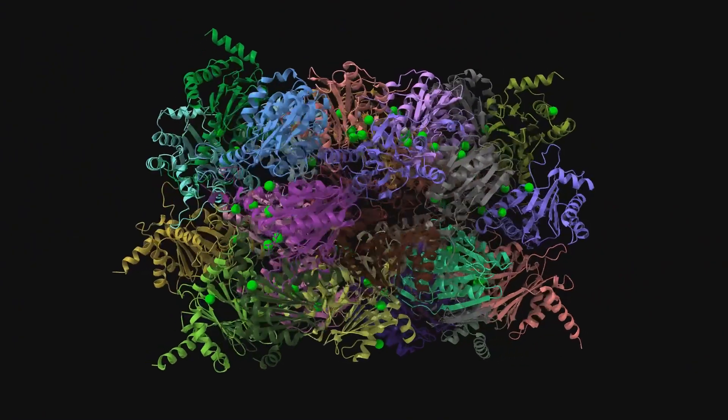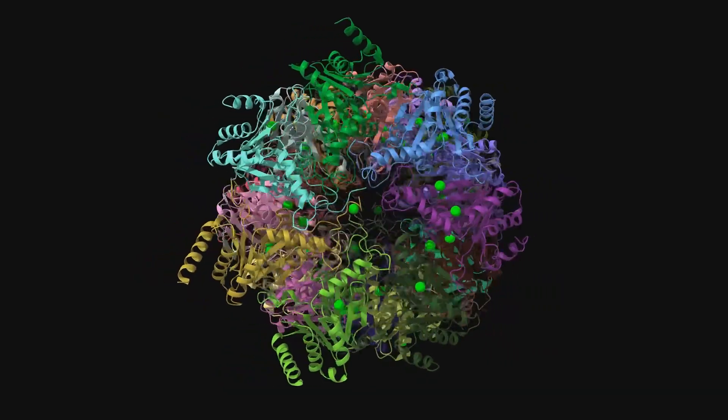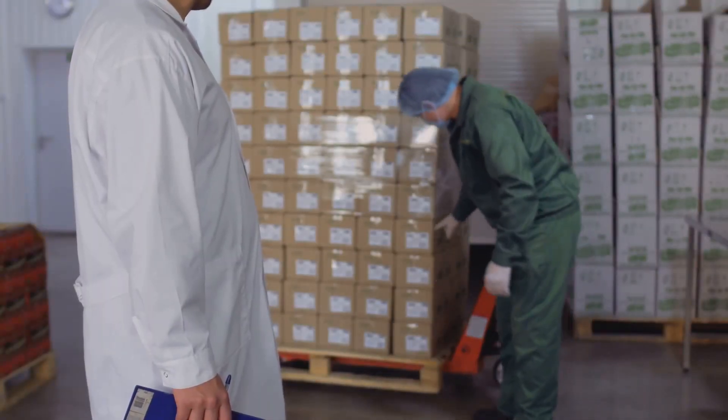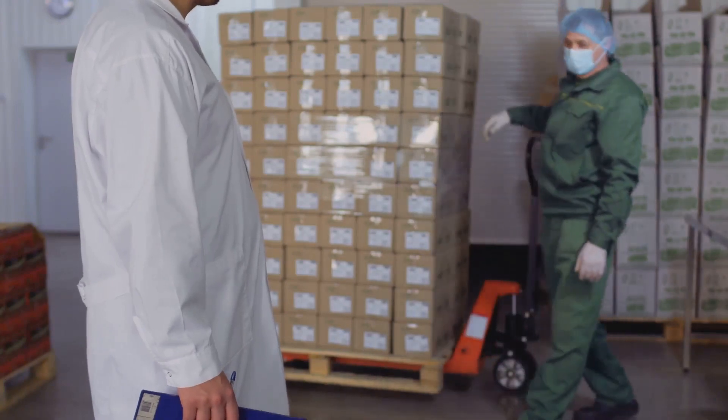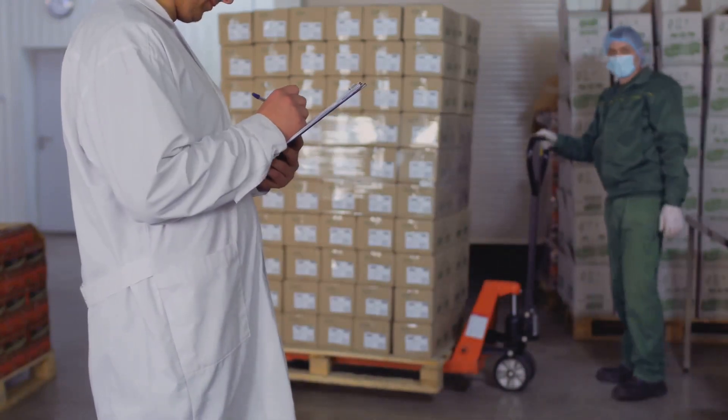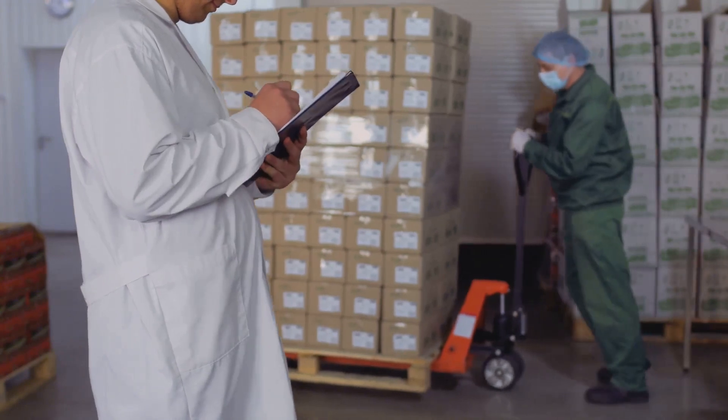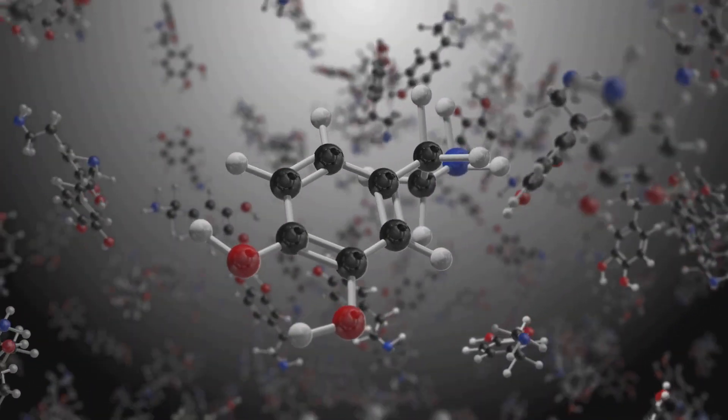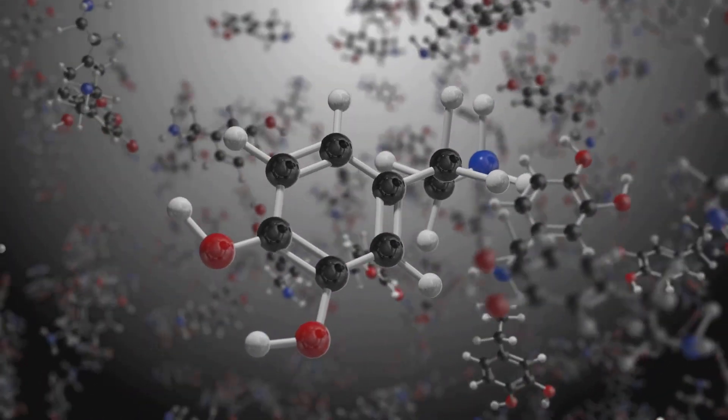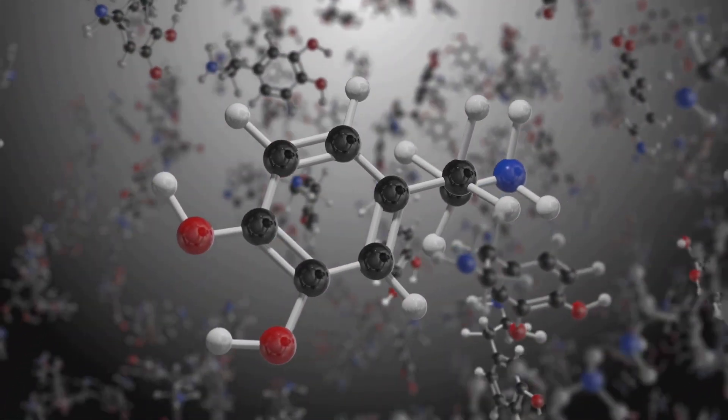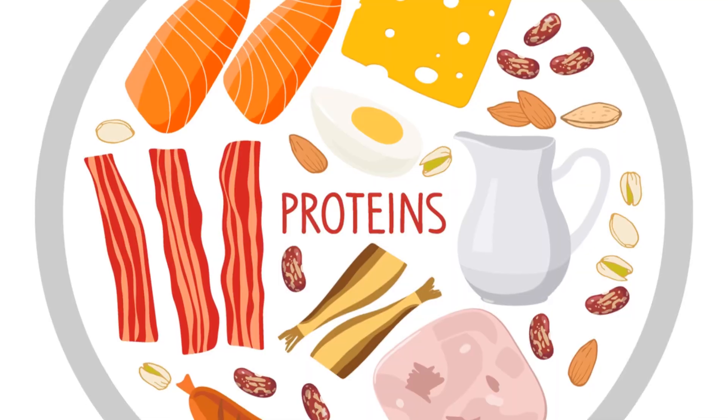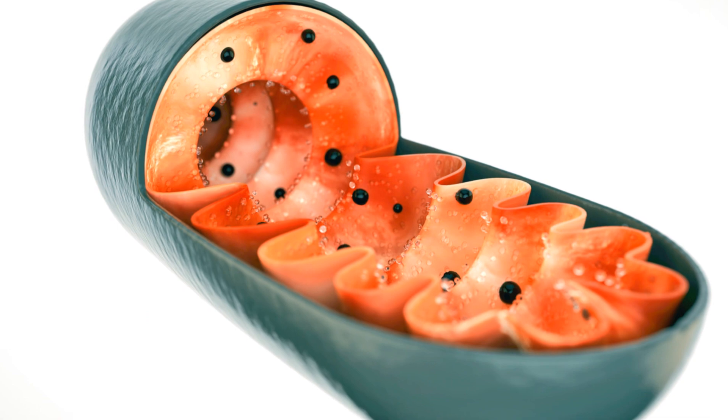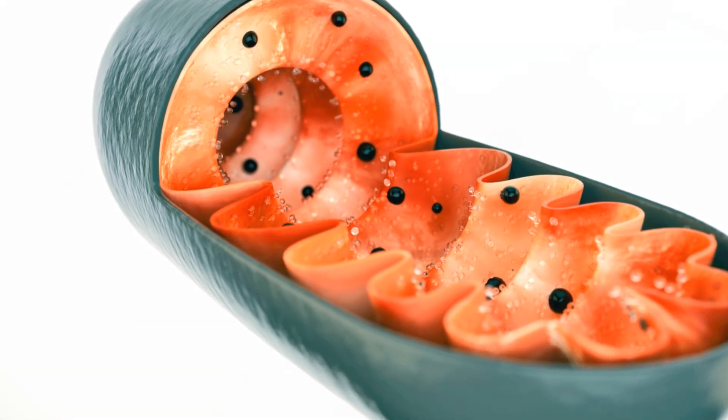Misfolded proteins can be non-functional or even toxic to the cell. The ER plays a critical role in quality control, ensuring that only properly folded proteins are allowed to exit the ER and proceed to their final destinations. The rough ER is a protein synthesis powerhouse, producing a constant stream of proteins that are essential for the cell's survival and function. Its ability to synthesize, modify and fold proteins is essential for the proper functioning of all eukaryotic cells.